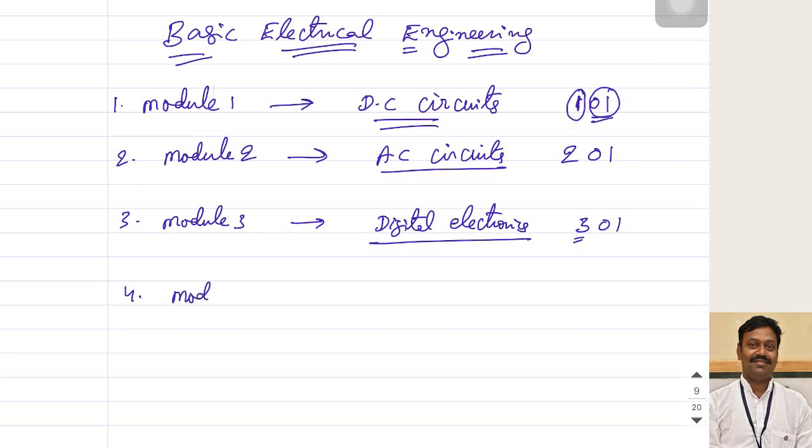After this, we will see module number five. In module number five, we are going to discuss about analog electronics. In analog electronics, we are going to see the introduction to diodes, transistors.